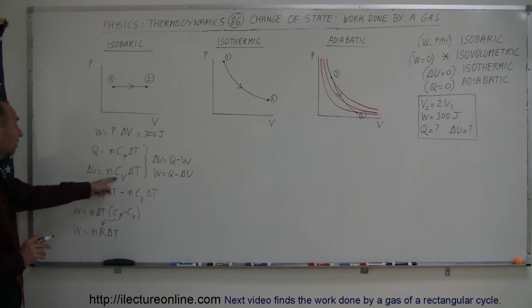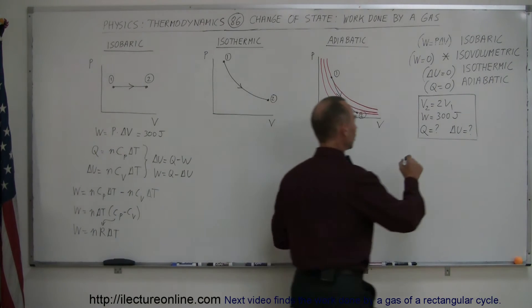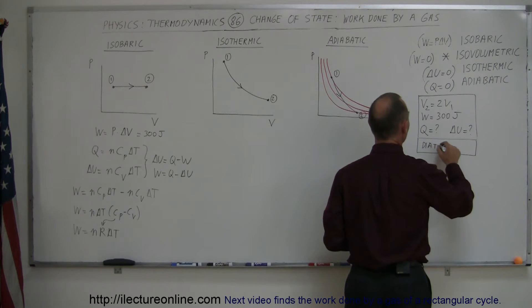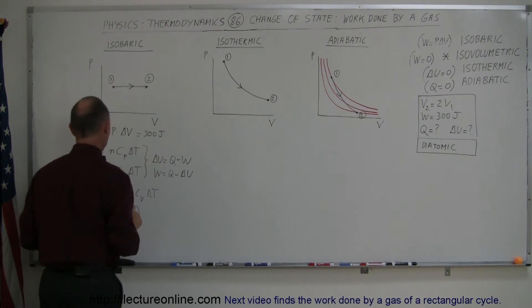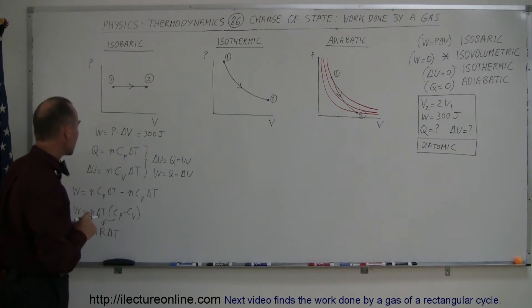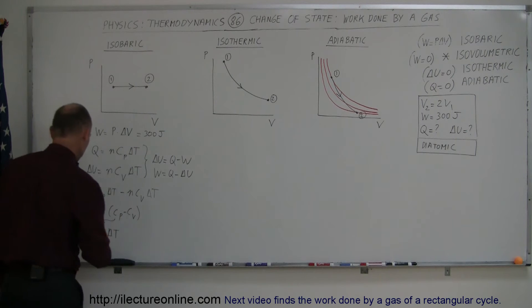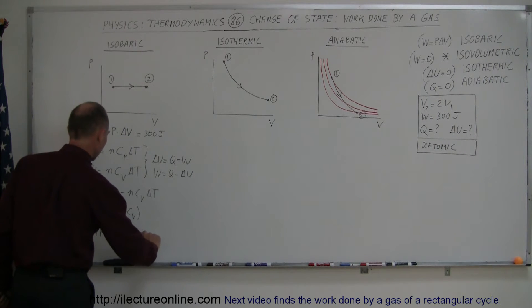Now, also remember that C sub V for depending upon what gas we're dealing with, I should probably make that a condition or a problem. Let's say that we're dealing with a diatomic gas, which means that in this case, C sub P is, let's see, C sub P would be 3 over 2 R. Well, it doesn't matter. Hang on a second. Let's continue. Work is equal to that. So this is equal to 300 joules.